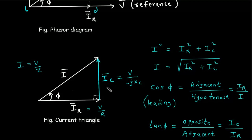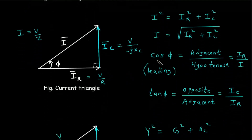Applying Pythagoras theorem to this right-angle triangle: hypotenuse squared equals adjacent side squared plus opposite side squared. So I squared equals IR squared plus IC squared, therefore I equals the square root of IR squared plus IC squared. Cos phi equals adjacent side upon hypotenuse, so cos phi equals IR by I. This cos phi is the power factor, and it will be leading because of the capacitor. Tan phi equals opposite upon adjacent, so tan phi equals IC divided by IR.